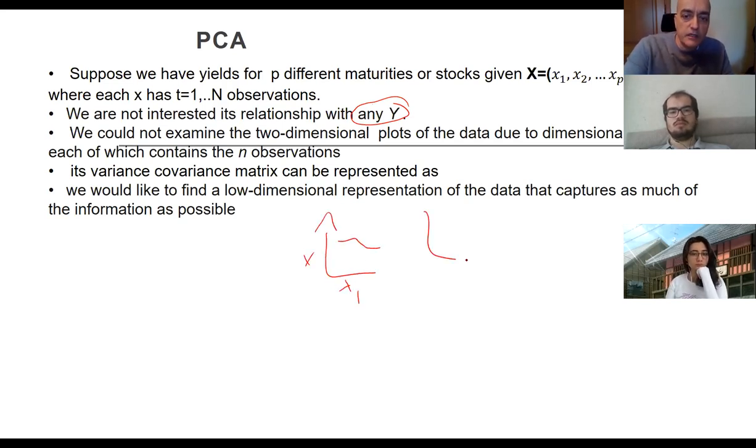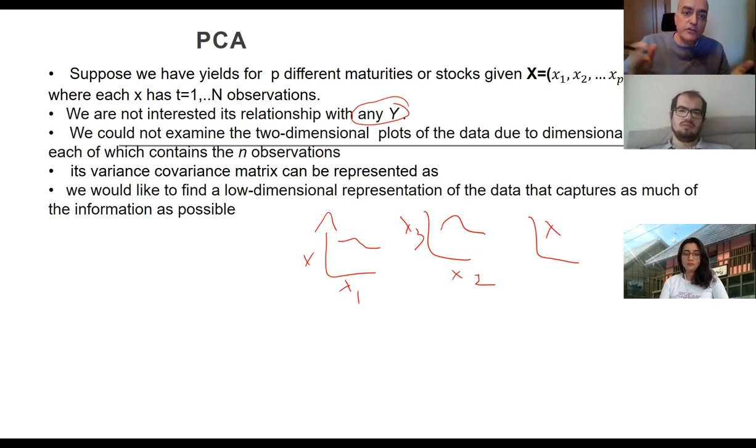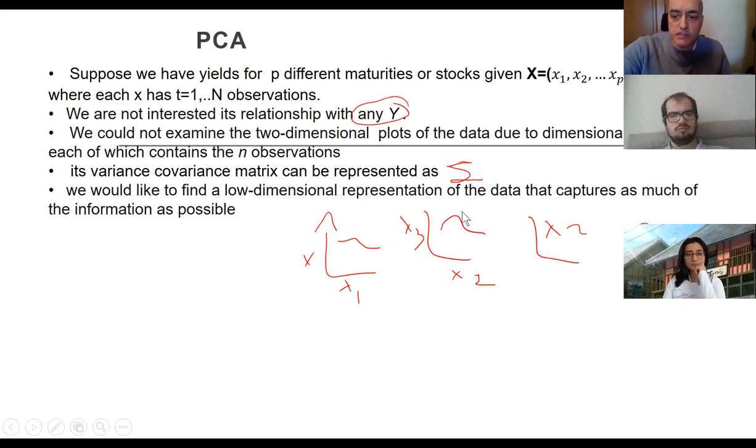Due to dimensionality problems we cannot really look at all these X1 to X2, X2 to X3 pairwise. How can you really find out which one to focus on or whether you can see the whole picture by just looking at these small graphs? What I'm really after is to discuss a global dimension lower than P dimension representation of the data that captures as much information as possible. That's the idea of PCA.